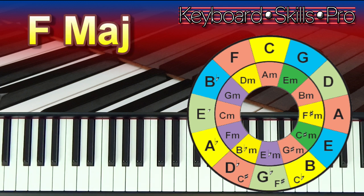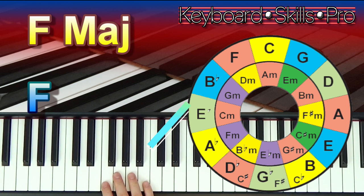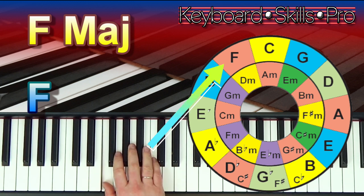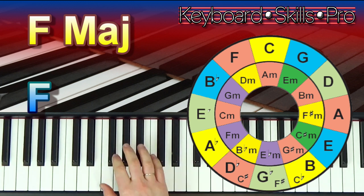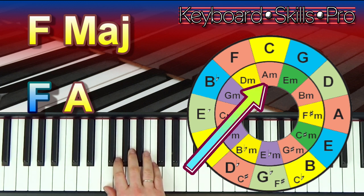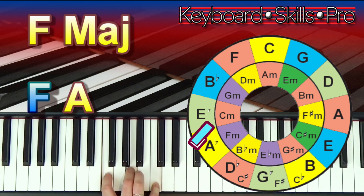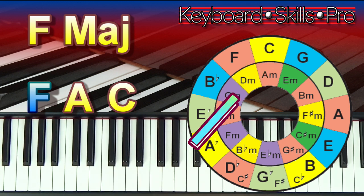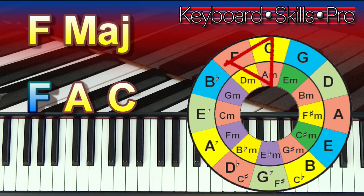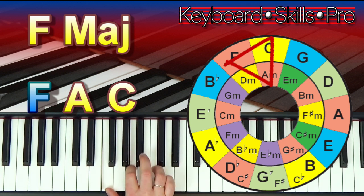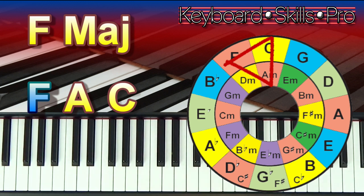Let's say we wanted to work out the notes of an F major chord. First we look on the circle of fifths and find the F on the outer circle — that gives us our key note. Notice to the right there's an A on the inner circle, and that's the next note in the F chord. Then above it is the C. That creates a little triangle shape, and those three points of the triangle give you the three notes of the chord.